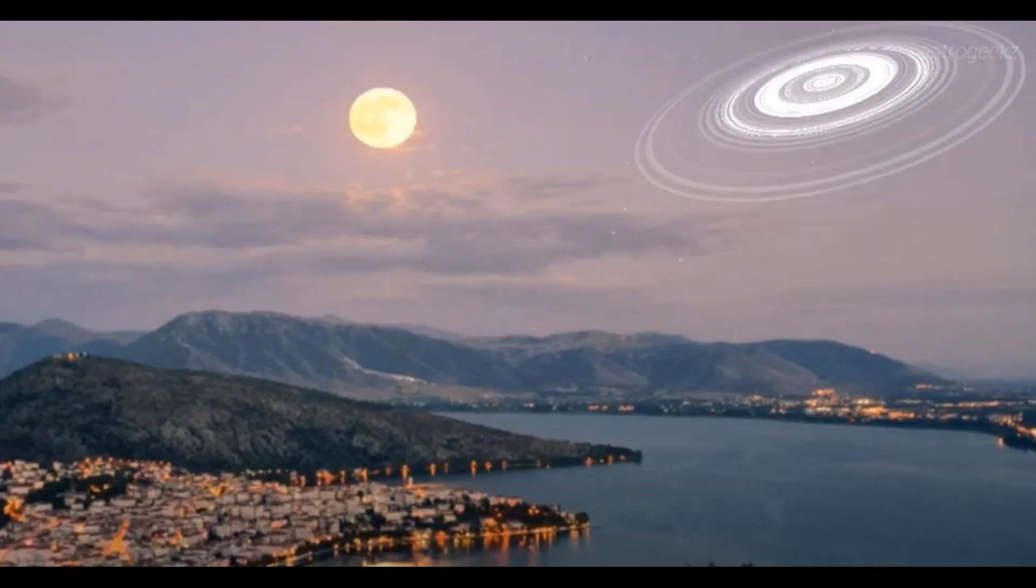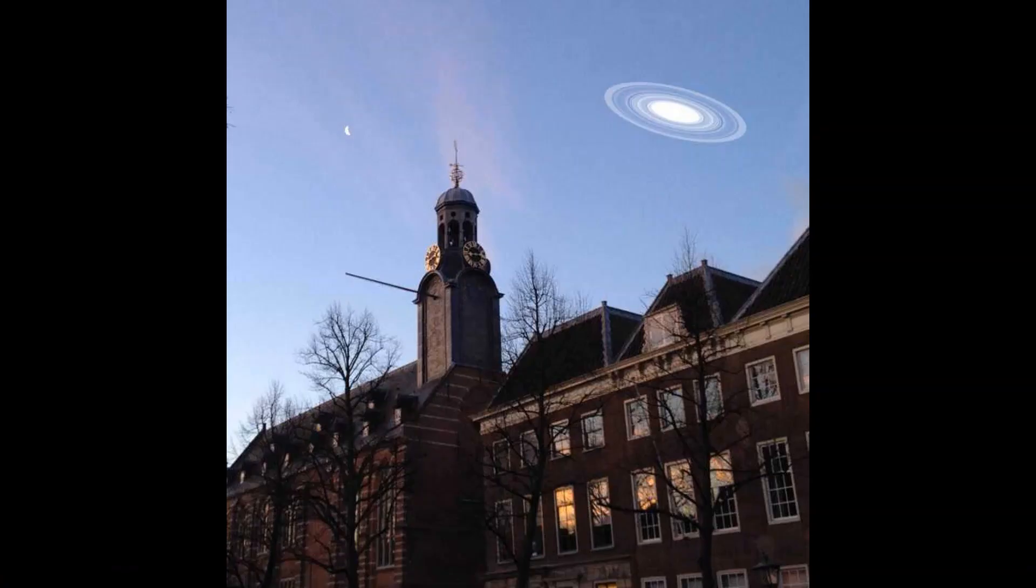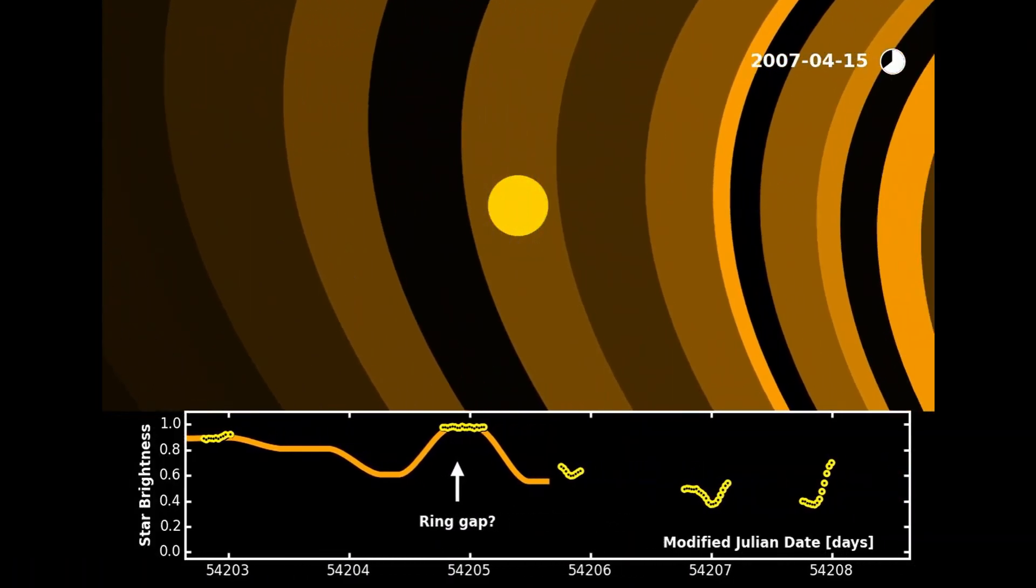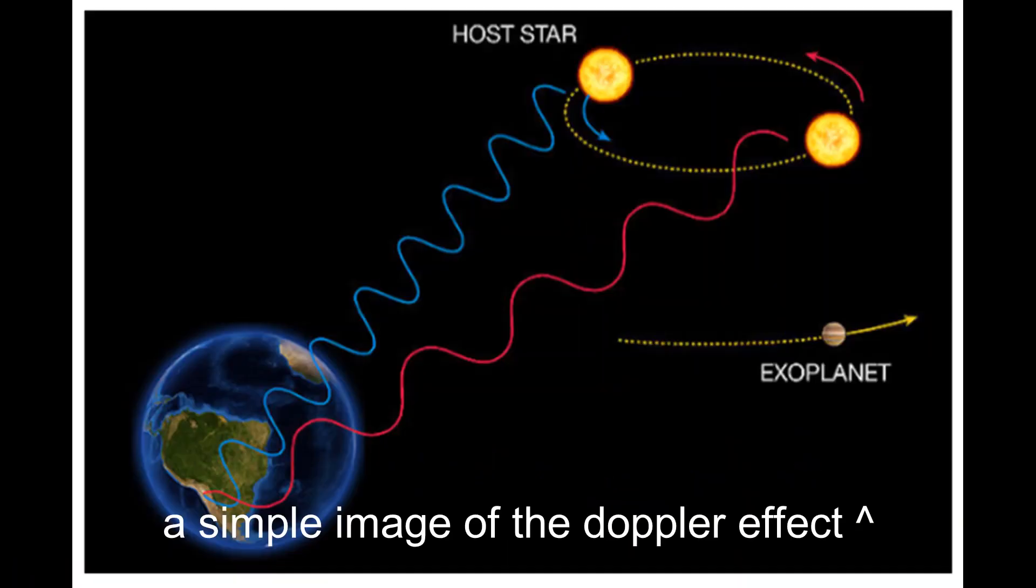If we could replace Saturn's rings with the rings around J1407b, they would be easily visible at night and be many, many times larger than the full moon.